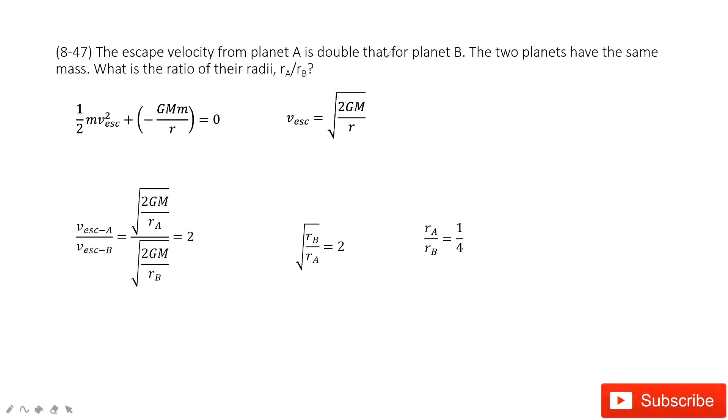Welcome to my channel. I'm Chan Jingxu. Let's look at problem 47 in chapter 8. In this one, you can see we have two planets A and B. They have the same mass, and we know the escape velocity for A is double that for B.